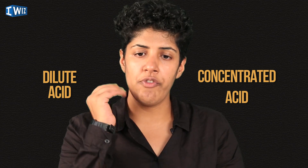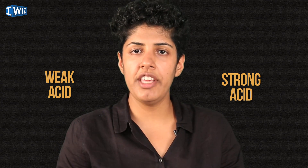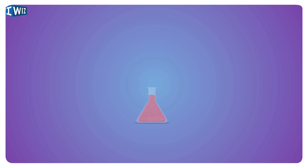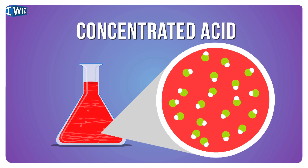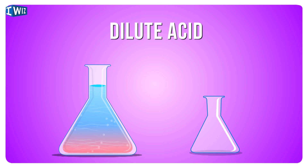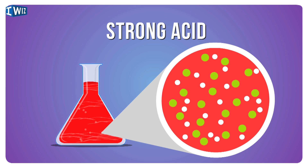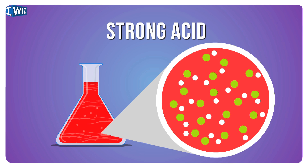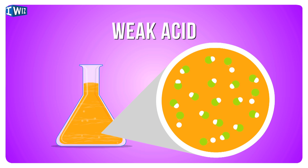Before we wrap up, note the difference between concentrated/dilute and strong/weak acids. A concentrated acid is mostly acid with very little water; a dilute acid has a lot of water and very little acid. A strong acid is one that completely ionizes — it breaks down all its molecules to give H⁺ ions. A weak acid only partially ionizes; most of it remains bonded and does not fully disintegrate in water.